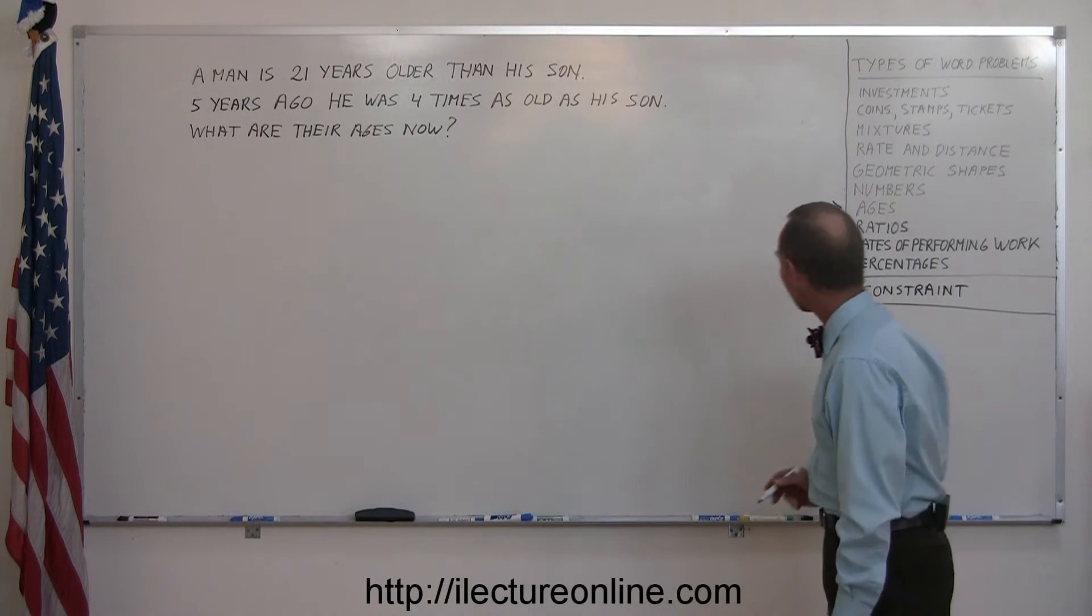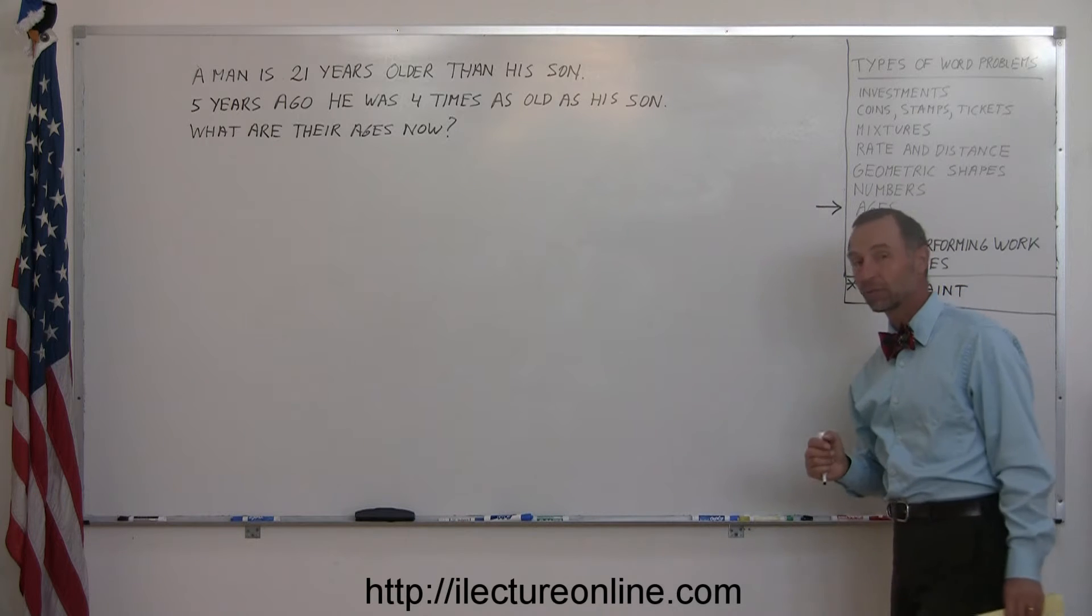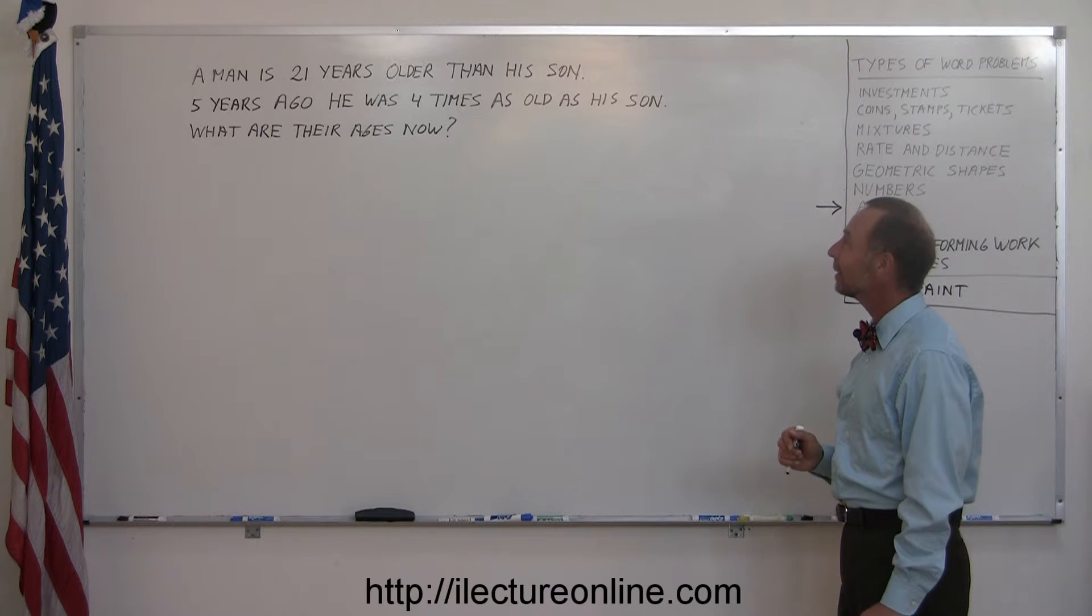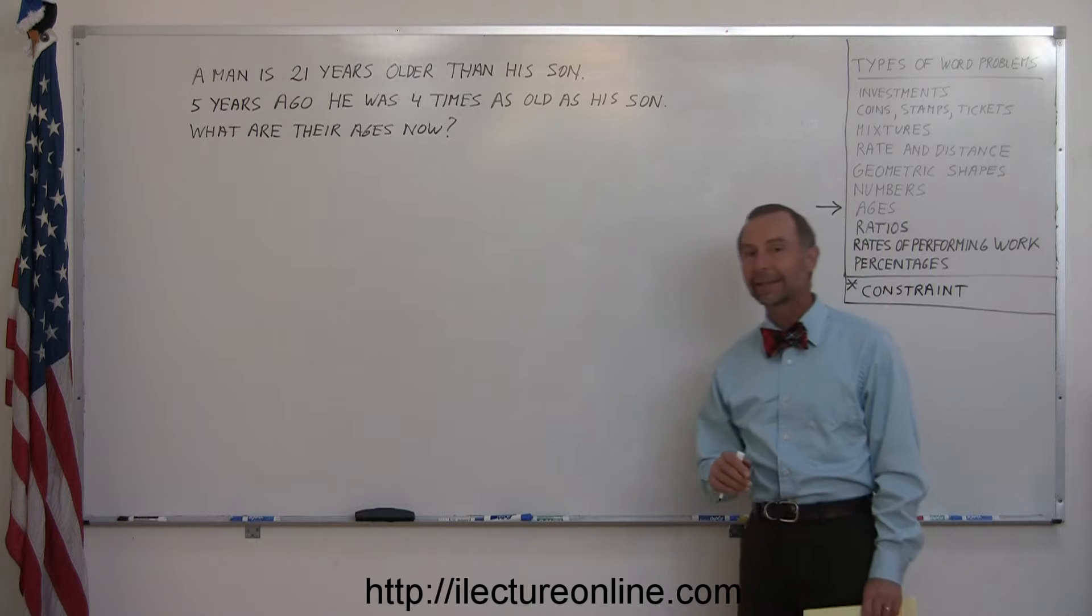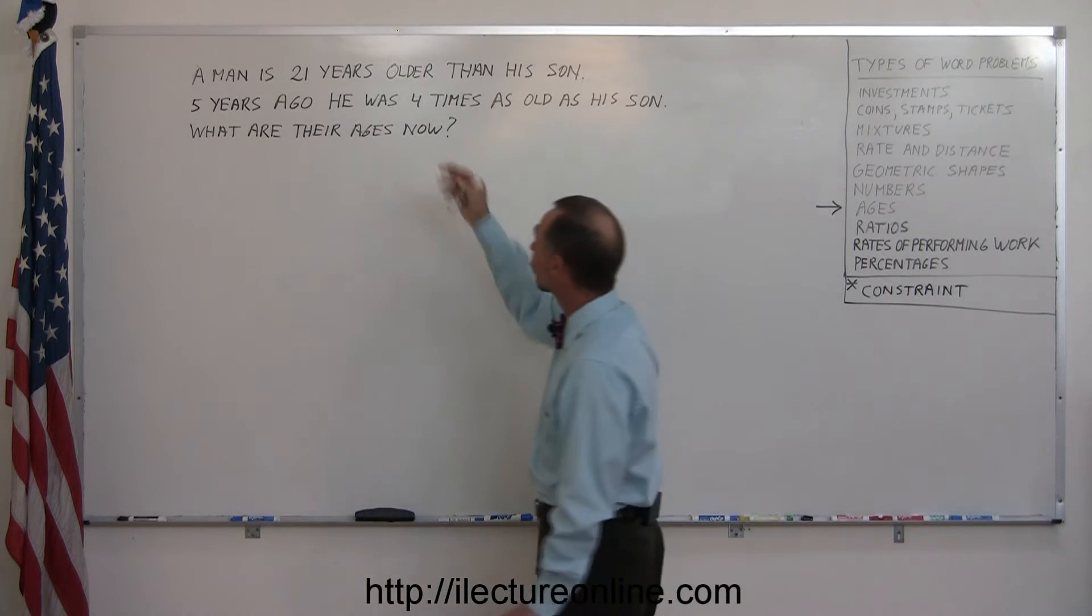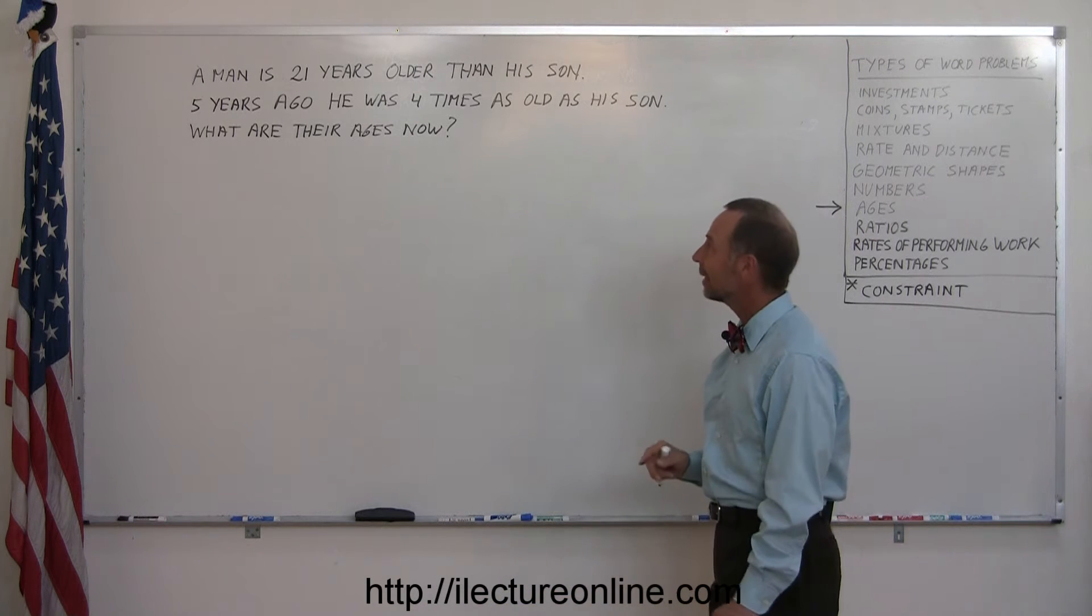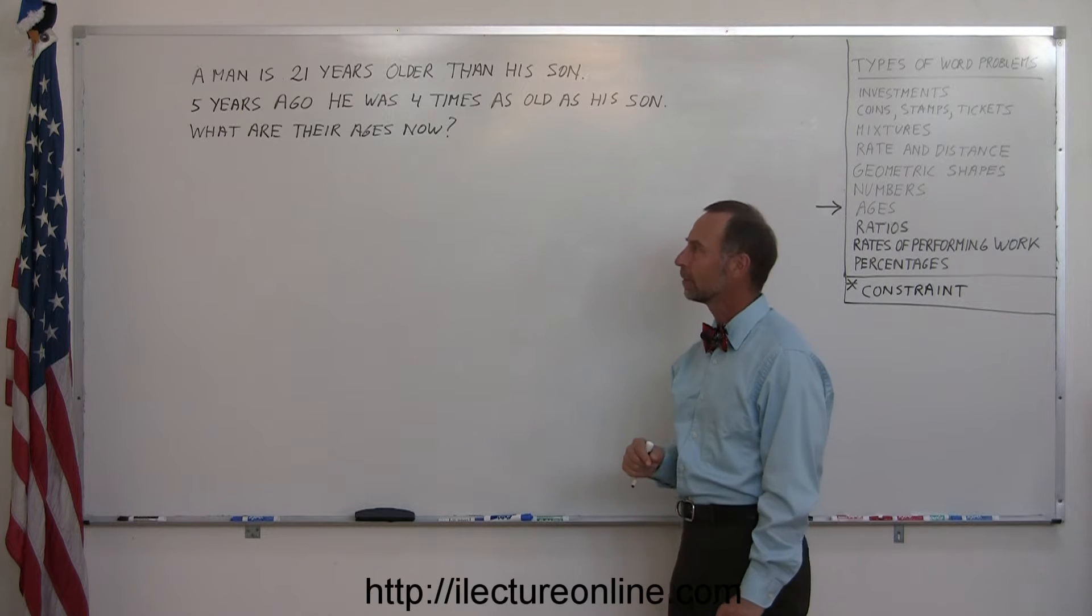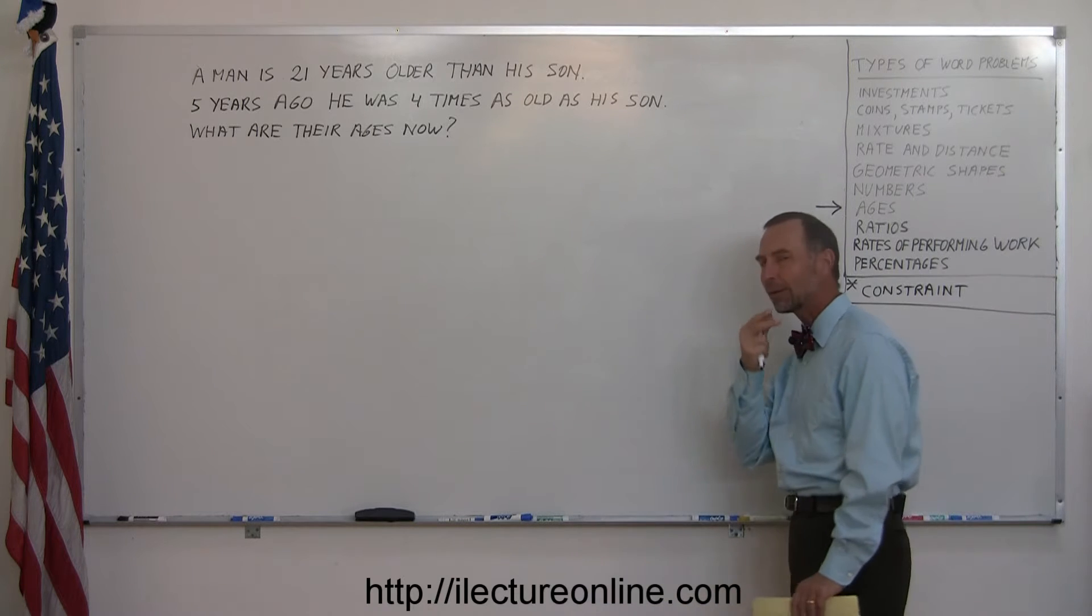Okay, we will now discuss a different kind of word problem, one that involves people's ages. Those are a typical type of problem, but unique in the way you want to approach them, especially when they talk about their relationship in age in the past or in the future. Like in this case, we have a man who is 21 years older than his son. Five years ago, he was four times as old as his son. What are their ages now? So a very typical problem. How do you approach one of those?